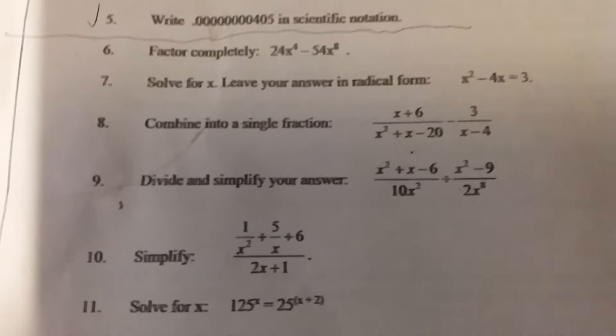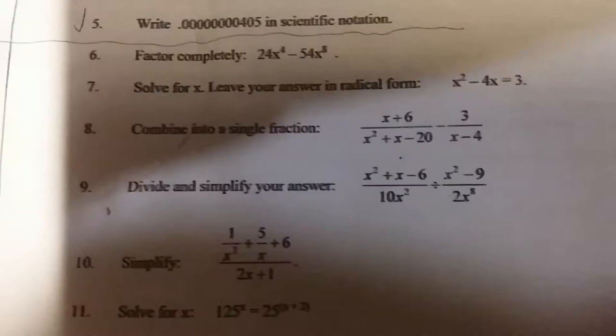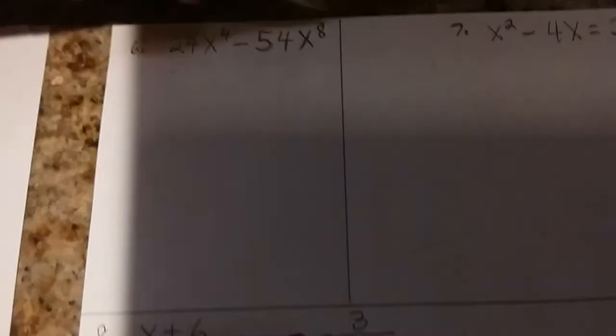Welcome back, good students. This is part two of three parts where I'm reviewing for the final exam. And we're up to number six, where it says factor completely, and it starts out with 24x to the fourth. So if you follow me, I'm going to start doing it right here. I already wrote it down.